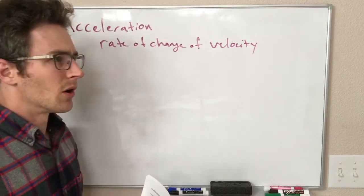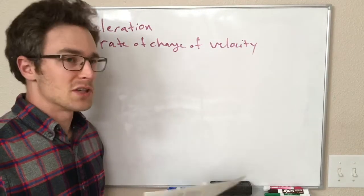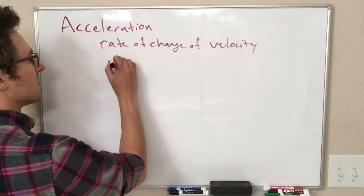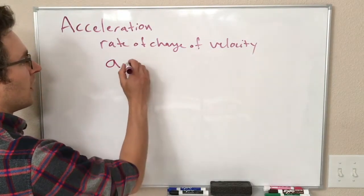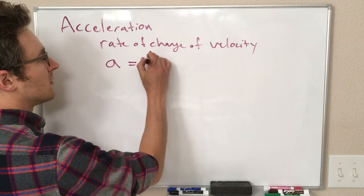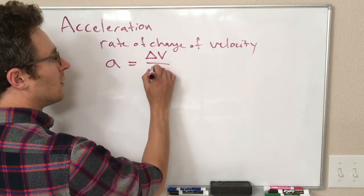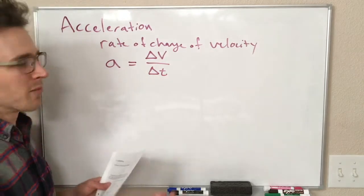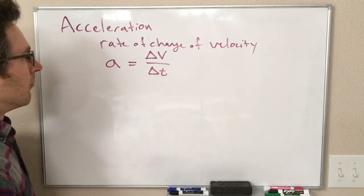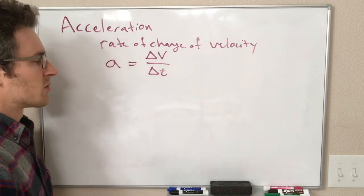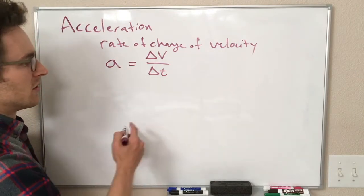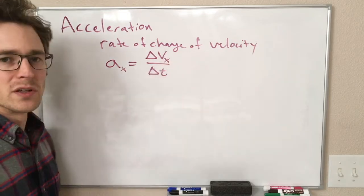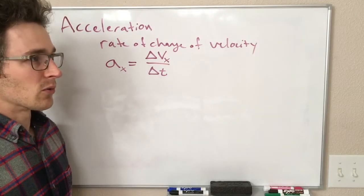Similar to our equation definition of velocity, we can write this rate of change as A equals delta V over delta T. So it's the change in velocity over the change in time — the time interval. And since we're talking about motion in the x direction in this chapter, we put x subscripts on both of these.